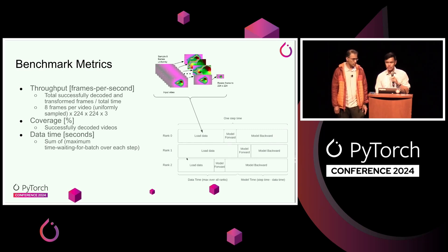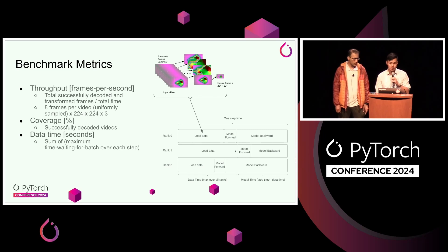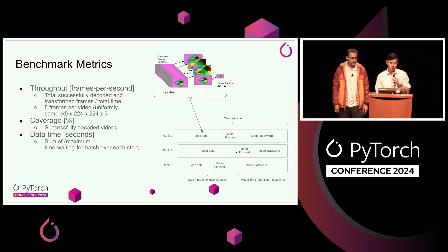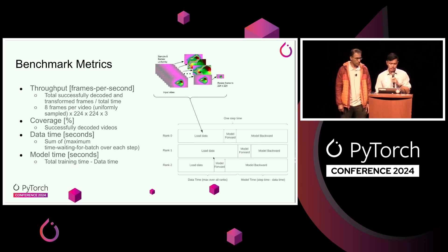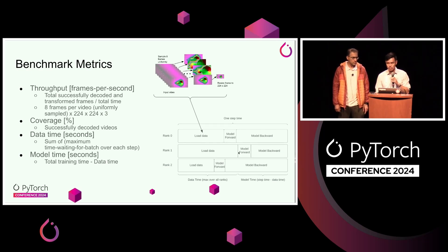Imagine we have three ranks training for one step, and rank one takes the longest time to fetch that next batch — that's the maximum over all the different ranks, which is the data time for that step. We report the data time as the sum of all these maximums across the entire training run. The last metric is model time — the full step time minus the data time — which includes things like host-to-device transfers, the model forward pass, and the model backward pass.